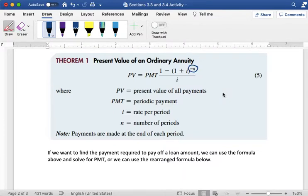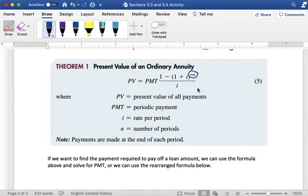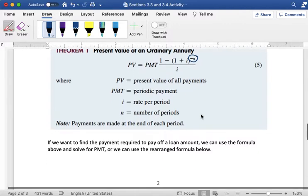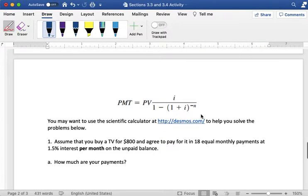So just like with the future value formula, we have two versions. We have this version where we plug in the payment amount and that will give us the total amount of the loan. We also have another version where we plug in the total amount of the loan and we solve for the payment amount. So depending on what the question is asking for, we can use either of those two formulas.